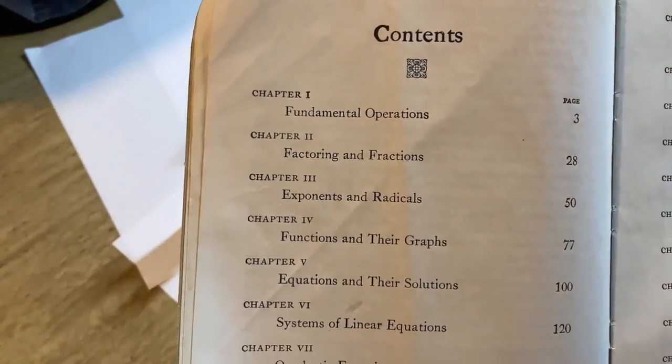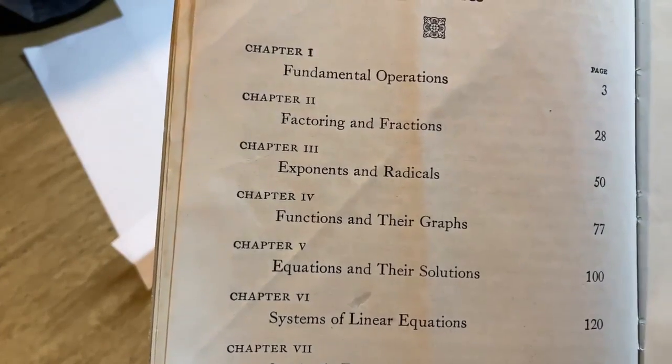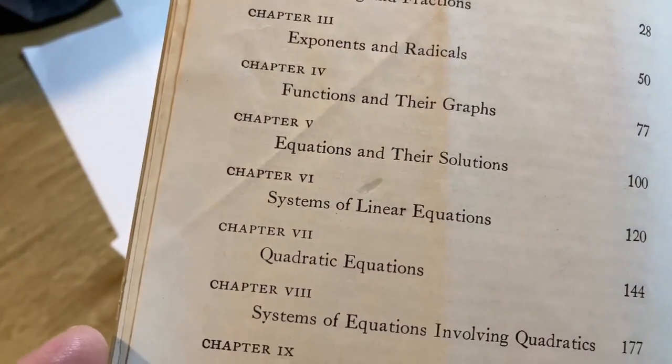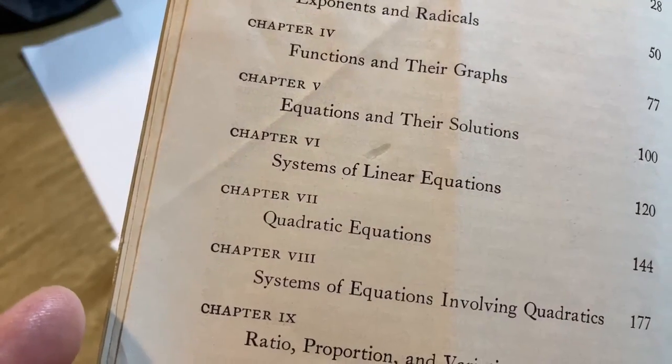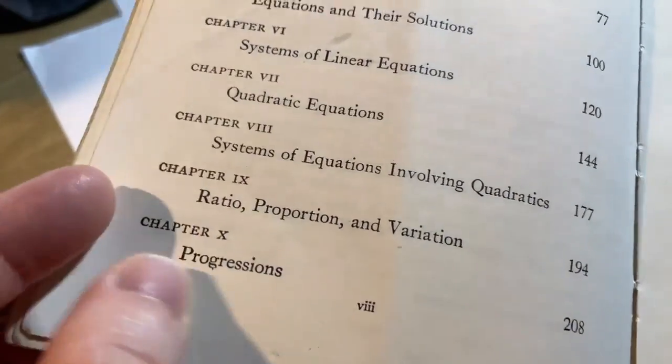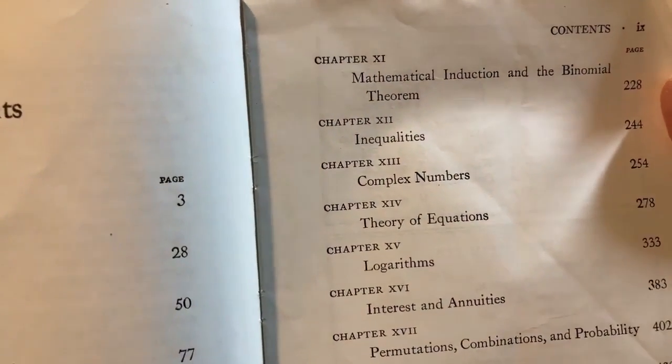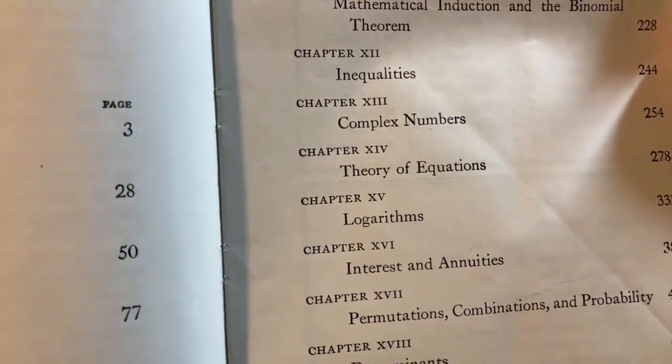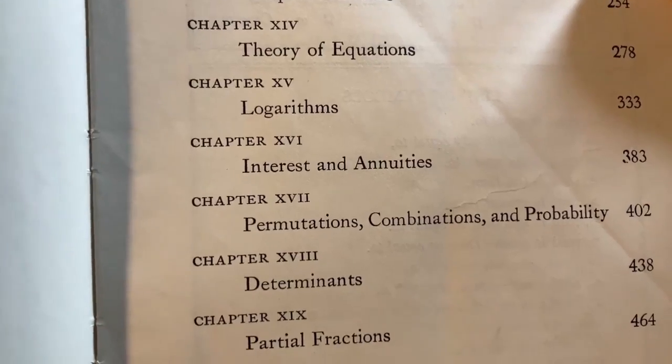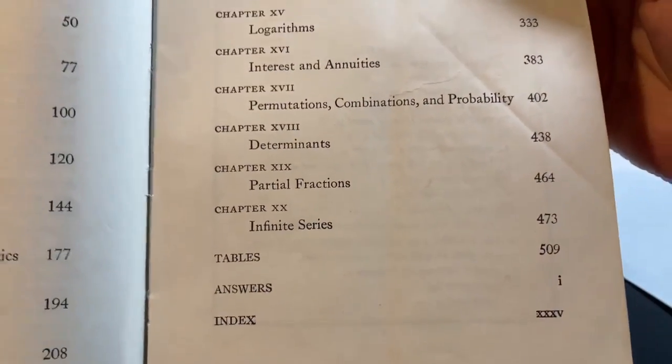So chapter one is on fundamental operations. Two is on factoring and fractions. Three is exponents and radicals. Four is functions and their graphs. Five is equations and their solutions. Then we have systems of linear equations, quadratic equations, systems of equation involving quadratics, ratio, proportion, and variation. Progressions. So very standard material. Mathematical induction and binomial theorem. Inequalities, complex numbers, the theory of equations, logs, interest, and annuities. Some counting and probability. So permutations, combinations, and probability. Determinants, partial fractions, then infinite series, tables, and answers.